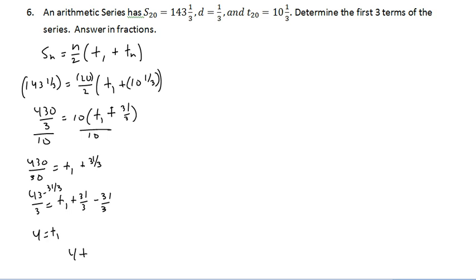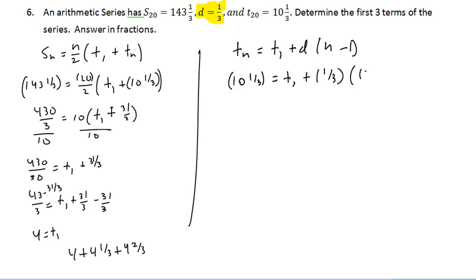So the first three terms of our series are going to be 4, 4 and a third, and 4 and 2 thirds. Because our common difference is a third. So we just need to add a third every time. Notice we also could have used our formula from yesterday, because we've been given so much information. And this is probably easier. I just used the other one because today's lesson was on arithmetic series, so I figured we could use that formula. So let's use t20. So that's 31 over 3 equals t1 plus 19 over 3. Just subtract 19 over 3 from both sides. And we get 12 over 3, which is 4, which of course gives us that.